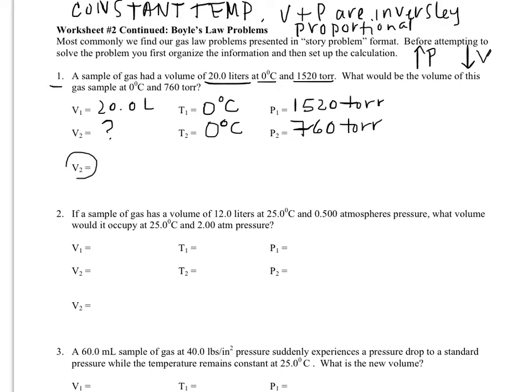So we are going to need to find the version of Boyle's law that solves for V2. If we look at our gas laws cheat sheet that says that V2 equals P1 times V1 divided by P2. So we'll just plug in our numbers: 1520 times 20 divided by 760.